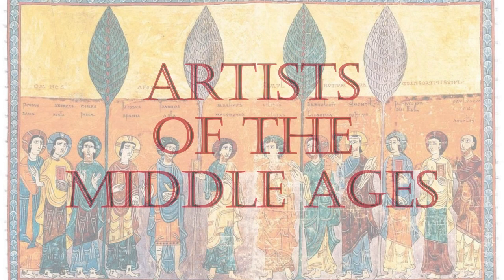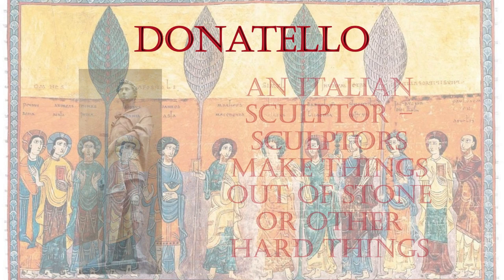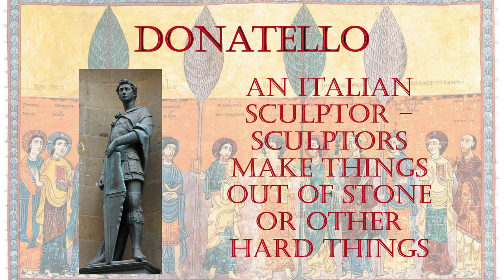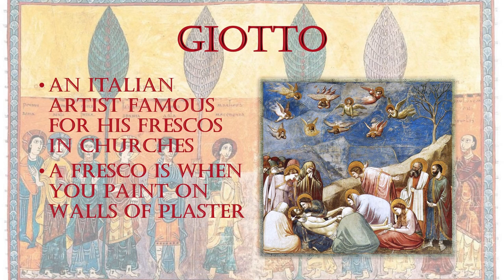Artists of the Middle Ages. Donatello was an Italian sculptor. Sculptors make things out of stone or other hard materials. Giotto was an Italian artist famous for his frescoes in churches. A fresco is when you paint on walls of plaster.